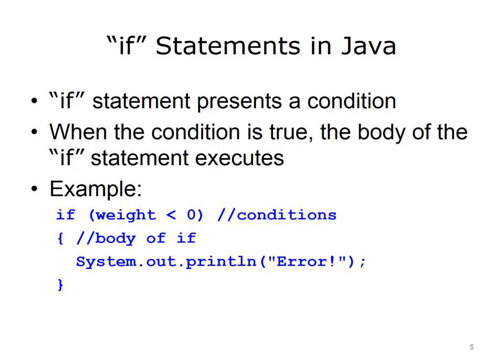If statements are conditional, which means they execute only if a specified condition is true. An example of an if statement in Java is given on this slide. The first line of the if statement begins with if, followed by a condition in parentheses. When this condition evaluates to true — in this case if weight is less than zero — then the body of the if statement executes. The body is the lines of code following the if statement, enclosed by curly brackets. In this example, there is only one statement in the if body: an output statement of error. There could be multiple statements in the if body, as long as they appear between the open and close curly brackets.